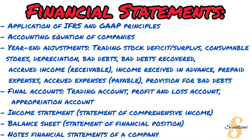Then get into the year-end adjustments. We are looking at calculations of trading stock deficit and trading stock surplus, consumable stores and consumable stores on hand, depreciation using both the cost method and the carrying value method. You must be able to calculate bad debts as well as bad debts recovered, accrued income, income received in advance, prepaid income, accrued expenses, and provision for bad debts, among other things such as director's fees.